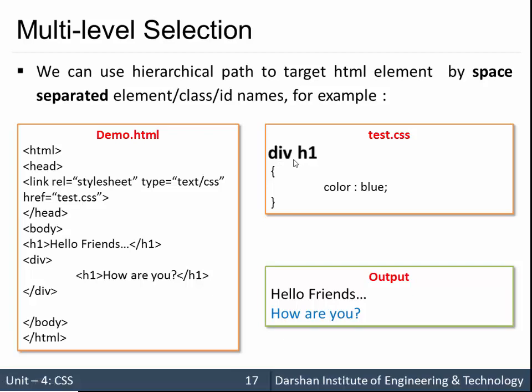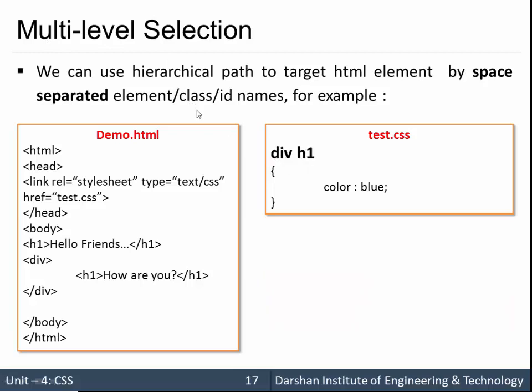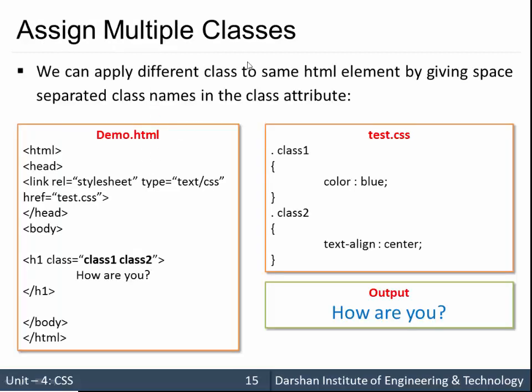Here the student might get confused. We have used space separated selectors. Space separated selectors inside CSS are for multi-level selection, and same as we have first seen multiple classes. In that particular case, we have used space separated class names in our HTML.